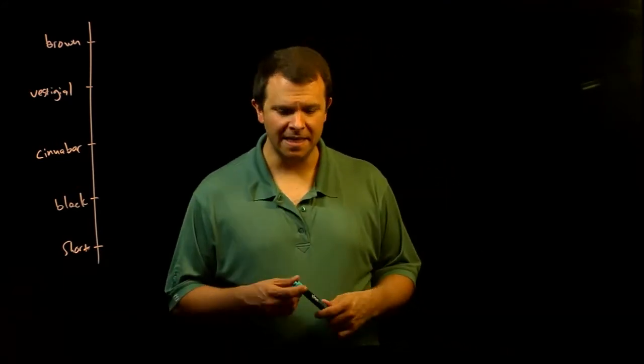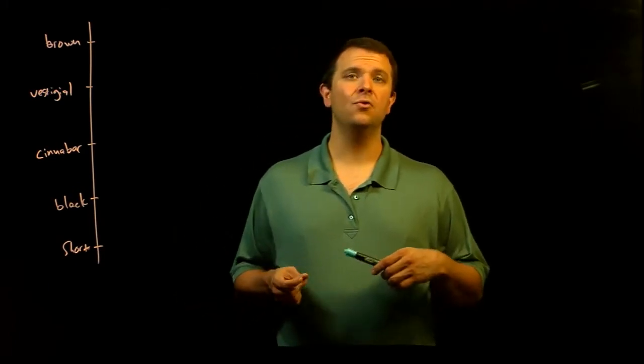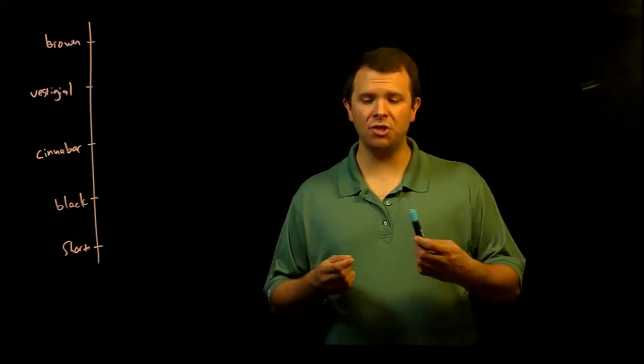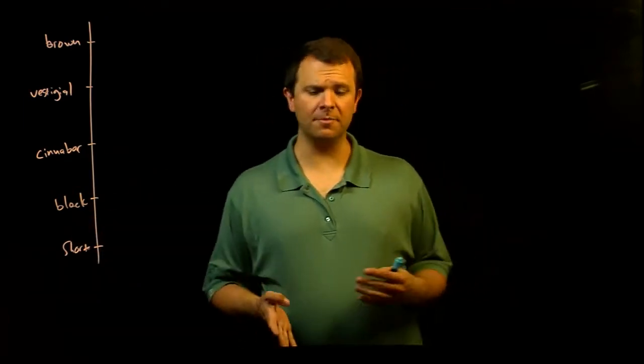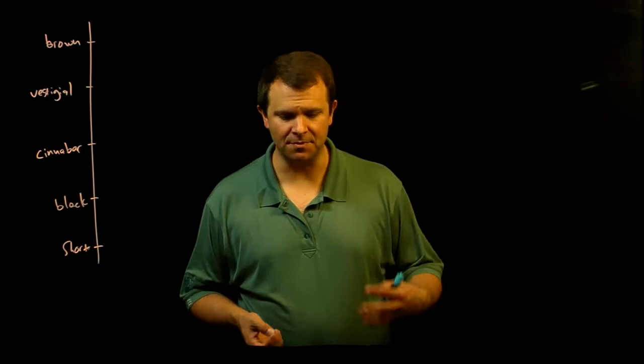Almost always, it starts by figuring out where the gene is on a genetic map, which is just a linear order of the genes on the chromosomes and the genetic distances between them.